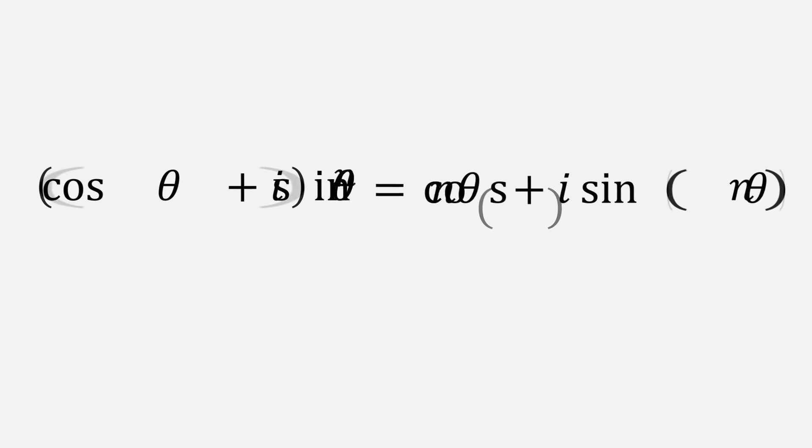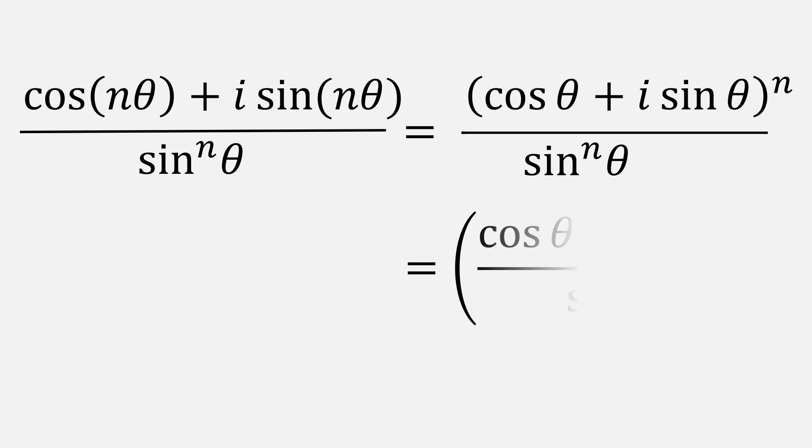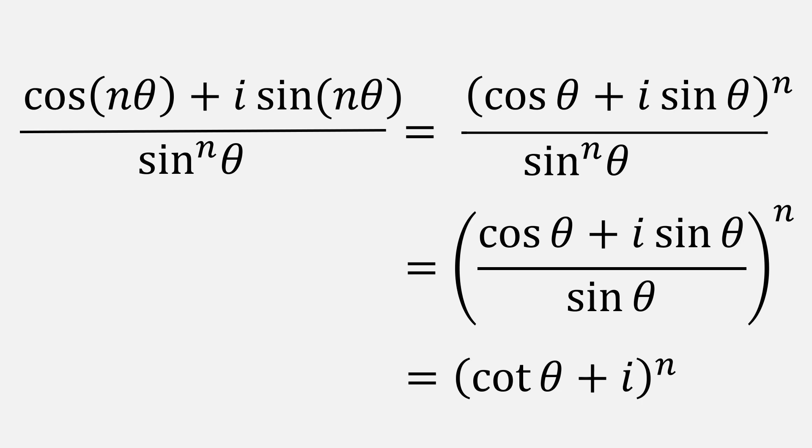Our goal is to get this into a cotangent-only expression so we can relate back to the sum of cotangents squared. Now let's divide both sides by sin theta to the n. Rewriting the right side as a fraction to the nth power, we get this. And dividing through by sin theta, we're left with cotangent theta plus i to the n.